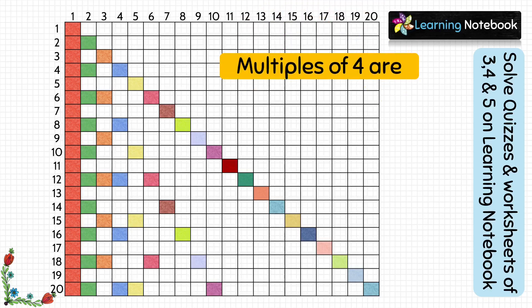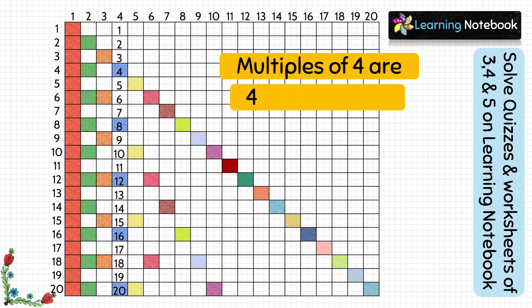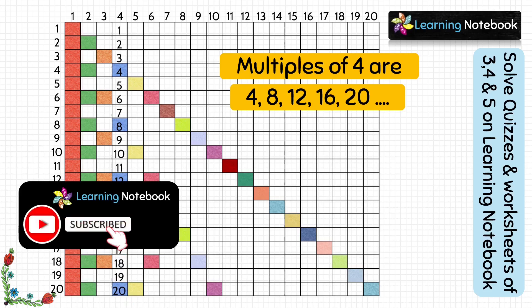Now let us find multiples of 4. For this, look at column 4. The boxes which are colored are 4, 8, 12, 16, 20 and so on. So these are the multiples of 4.